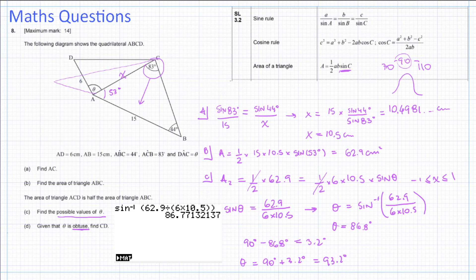If you want to check, you can always get your calculator and do the sine yourself. Sin of 93.2 and sin of 86.8, and the values match.